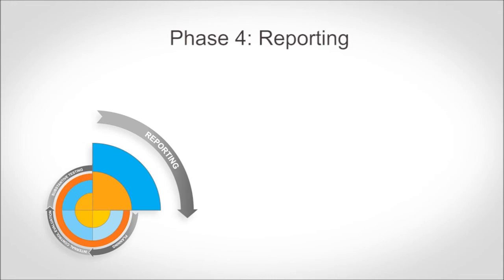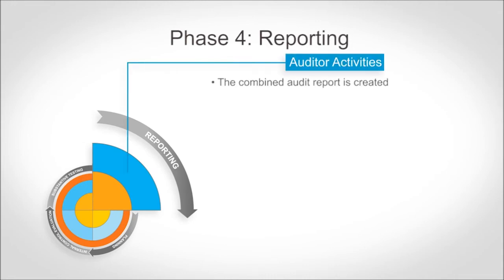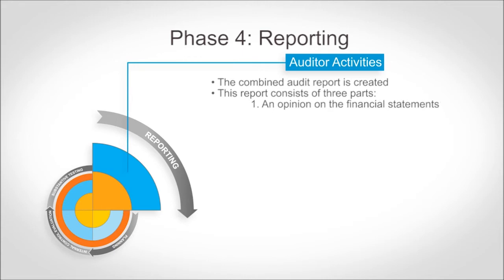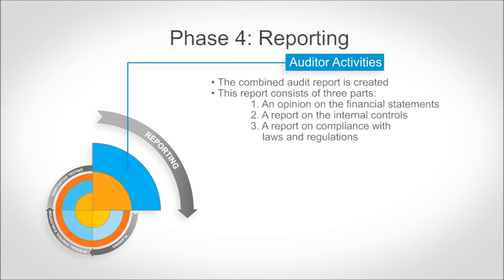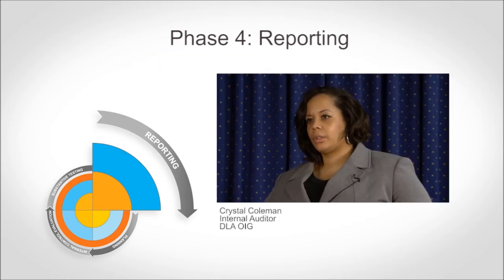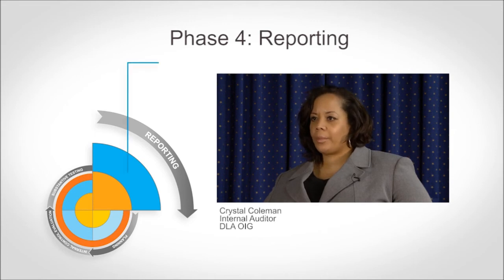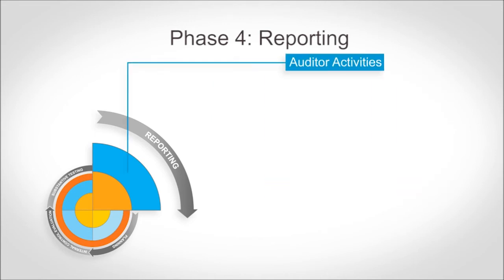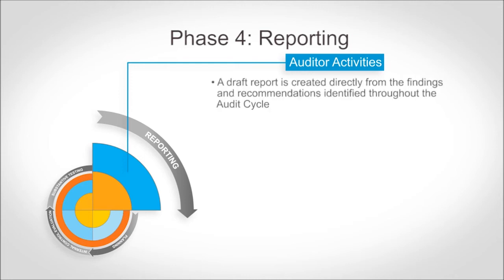In Phase 4, the Reporting Phase, the combined audit report containing an opinion or disclaimer is created. A combined audit report includes three parts: an opinion on the financial statements, a report on internal controls, and a report on compliance with laws and regulations. This is where findings and conclusions are detailed in written format. This report is based on all the audit work conducted throughout the year, and any findings and recommendations should come directly from those drafted throughout the cycle and shared with DLA.